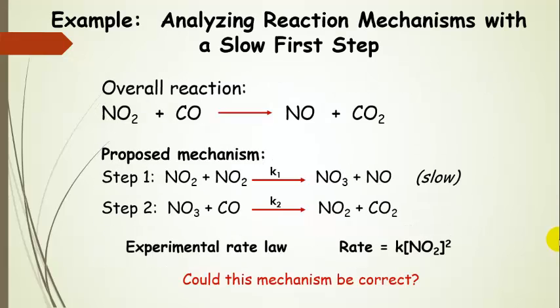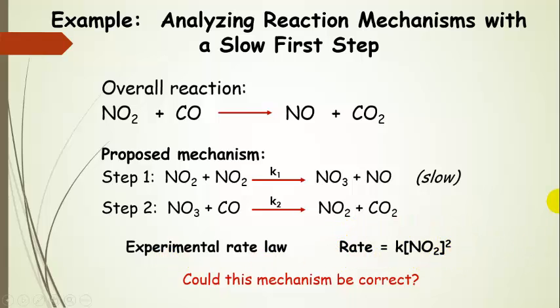Here is a reaction mechanism. The overall reaction is nitrogen dioxide reacting with carbon monoxide to produce nitrogen monoxide and carbon dioxide. The proposed mechanism has two nitrogen dioxide molecules colliding — this is the slow step with rate constant K₁. In step two, nitrogen trioxide and carbon monoxide react in a fast step to produce products. The experimental rate law for this reaction is rate equals K times [NO₂]², so it's a second-order reaction. We want to know whether this mechanism could be correct by deriving the rate law and comparing it to the experimental rate law.